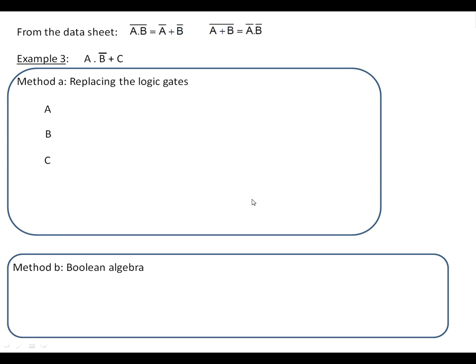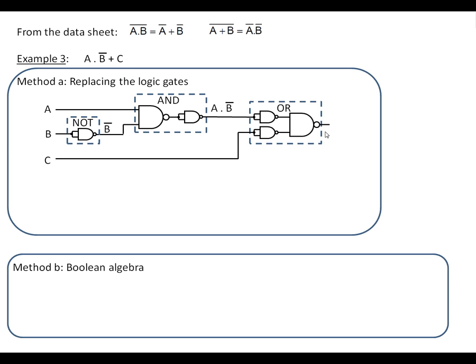Example three is more complicated. It's sort of a combination of the previous two. So first of all let's make the NOT B and then we need to AND it with A. That's our AND gate there. And then what we need to do is we need to put that OR with C. So that's the OR gate there.